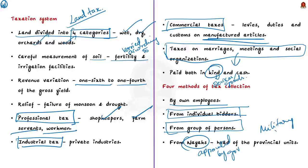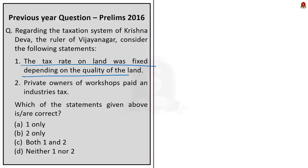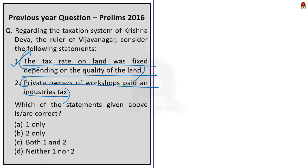Statement 1 says the tax rate on land was fixed depending on the quality of the land — this is correct. Statement 2 says private owners of workshops paid an industrial tax — this is also correct, as industrial tax was imposed on private industries. So the correct answer for this question is option C — both 1 and 2, because both statements are correct.